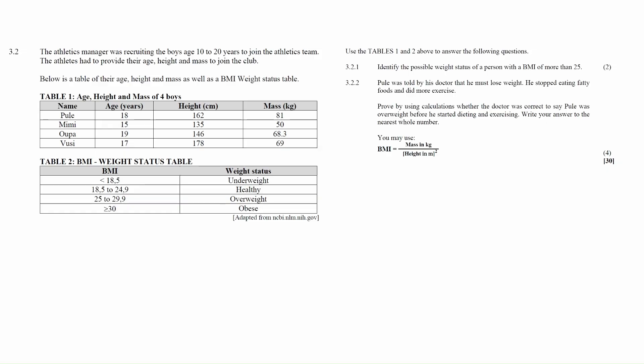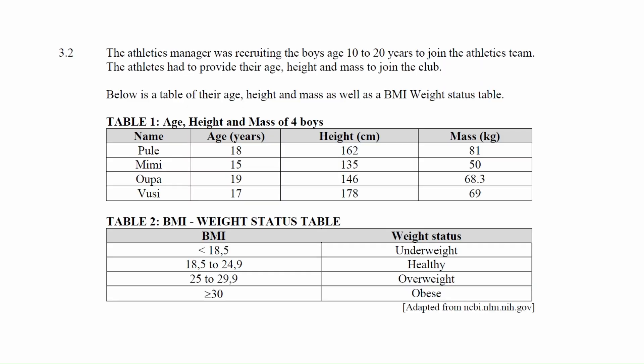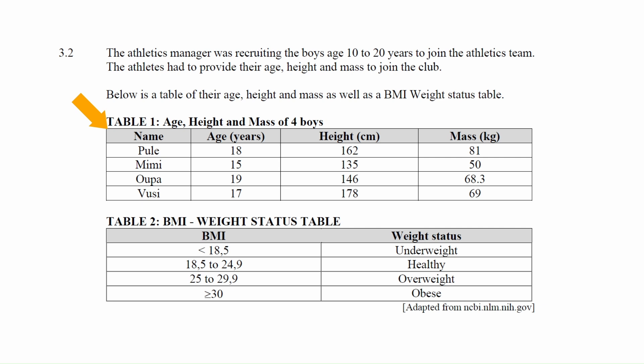Question 3.2 consists of two measurement questions assessing your understanding of body mass index. An athletics manager is recruiting boys aged 10 to 20 to join the team. Athletes must provide their age, height, and mass. Table 1 shows the age, height, and mass of four boys; Table 2 shows the BMI weight status table.